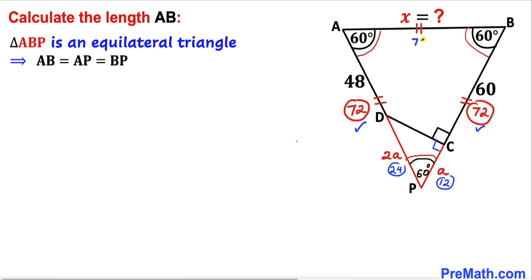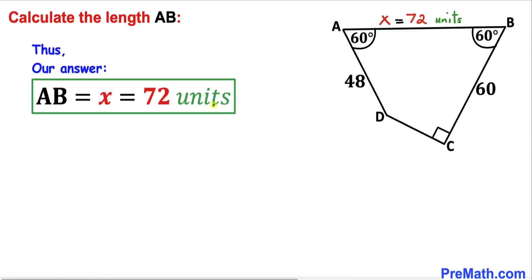Thus, AB = 72 units. Thanks for watching, and please subscribe to my channel for more exciting videos. Bye!